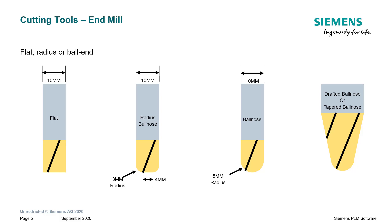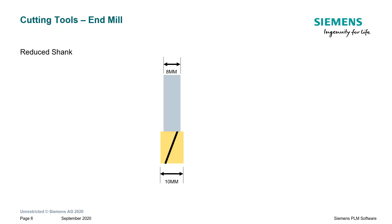The last picture is a drafted end mill with a ball on the end, also called a tapered ball nose end mill. A drafted or tapered end mill is used a lot for mold and die work — to retrieve an object out of a mold, the walls have to be tapered, not vertical. We use the drafted part of the end mill to machine the wall while machining some of the radii on the floor. We also have reduced shank end mills — in this example, a 10 millimeter cutting diameter with the shank reduced to 8 millimeters, which allows us to avoid rubbing the shank on the wall of an object we're cutting.